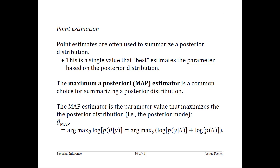The first estimator we'll talk about is the maximum a posteriori, or MAP estimator. The MAP estimator is a very common choice for summarizing a posterior distribution — it is the value of the parameter that maximizes the posterior distribution. Since we're nearly always working with distributions that are members of the exponential family, it's very common to compute the MAP estimator on the log scale, which often simplifies the process. Note that since the marginal density in the posterior distribution is simply a constant, you can also find the MAP estimator by finding the parameter that maximizes the data distribution multiplied by the prior distribution.